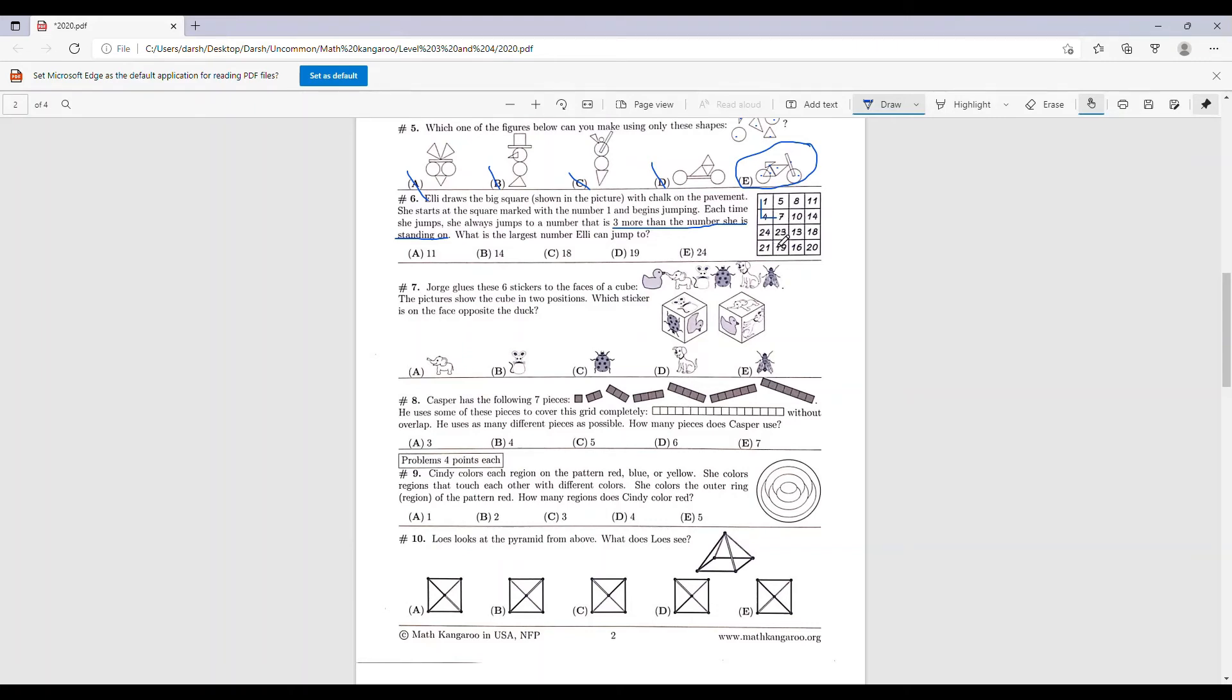And we know that the one that is 3 more than 7 is 10. Now what's 3 more than 10 out of 7, 8, 14, and 13? Well it's 13, so we'll continue this way. Now what's 3 more than 13? Well we know that it's going to be 16, so we continue.